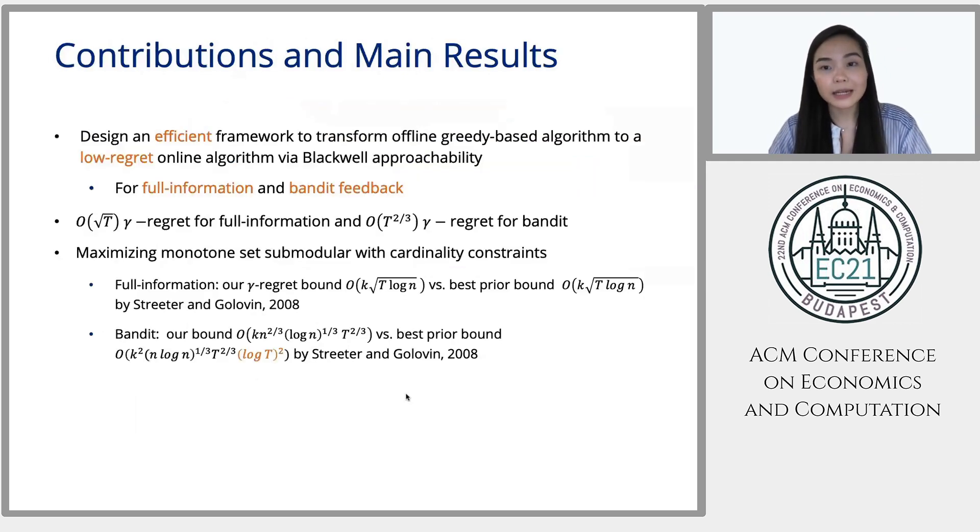After laying out the problem setting I will talk about our main results and contributions. So we designed an efficient framework to transform offline greedy based algorithms to their low regret online counterparts via Blackwell approachability for both full information and bandit feedback settings. And generally we have square root of T gamma regret for full information and T to the two-third gamma regret for the bandit setting. Now in our running example from before which is equivalent with the problem of maximizing a monotone set submodular function with respect to cardinality constraints, we match the previous gamma regret bound by Streeter and Golovin for the full information setting and we improve their bound in terms of T for the bandit setting.